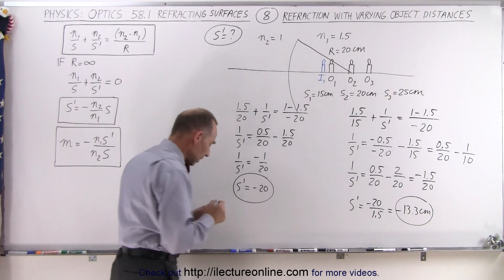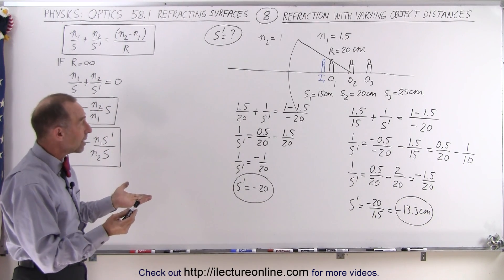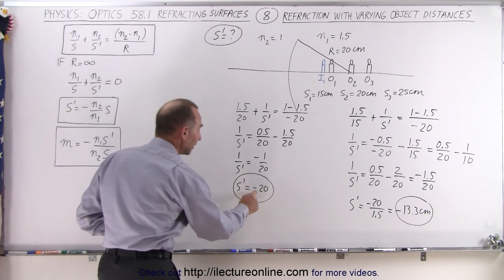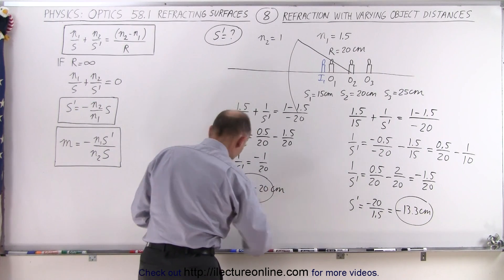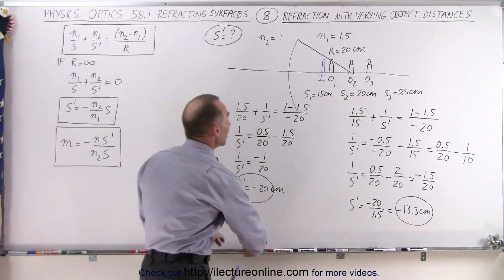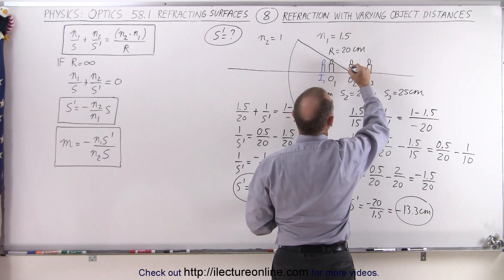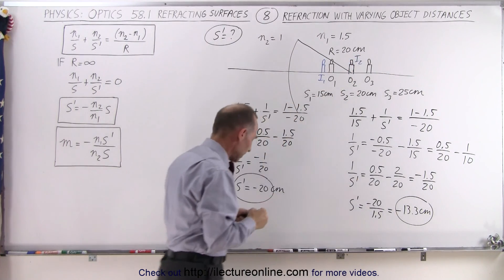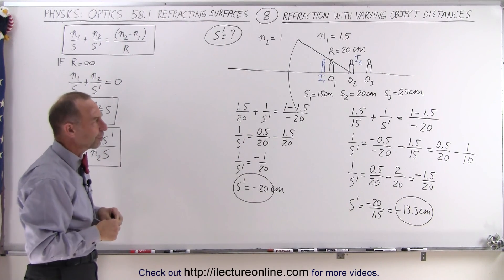That's kind of interesting. The object is 20 centimeters away, and the image is at the exact same location — 20 centimeters away. The negative means it's on the same side as the object, so the image is at the very same location as the object. That makes sense because it's at the center of curvature.